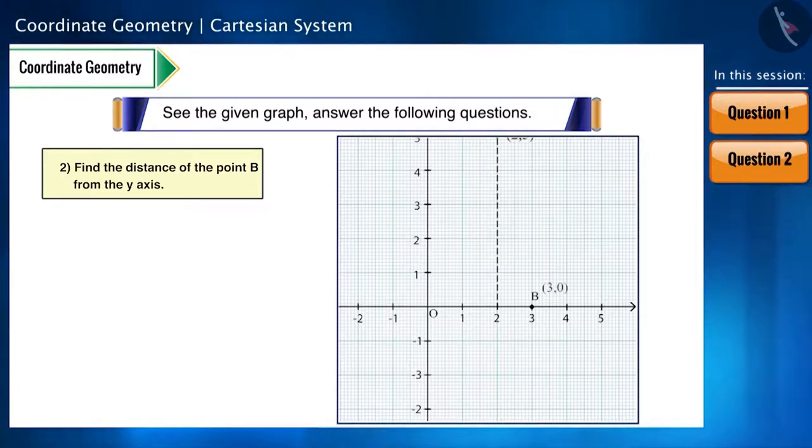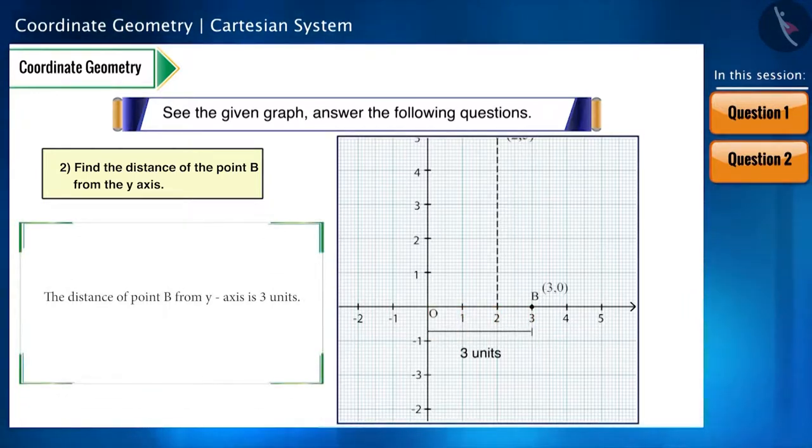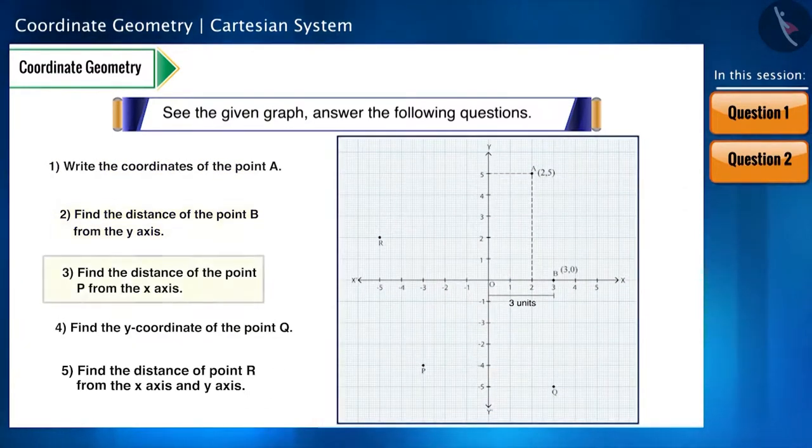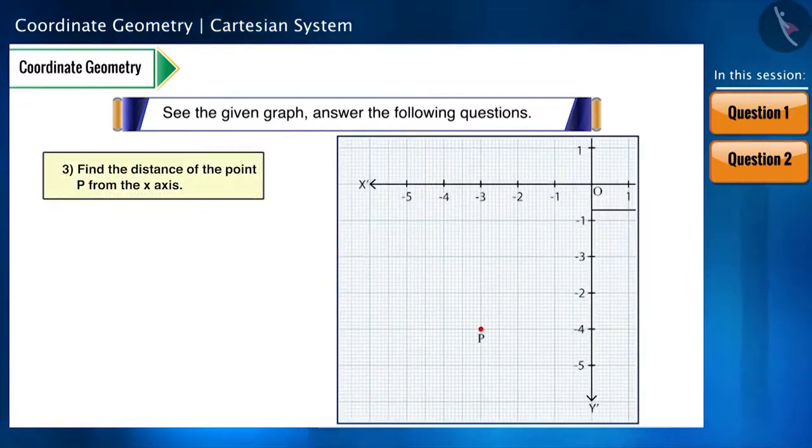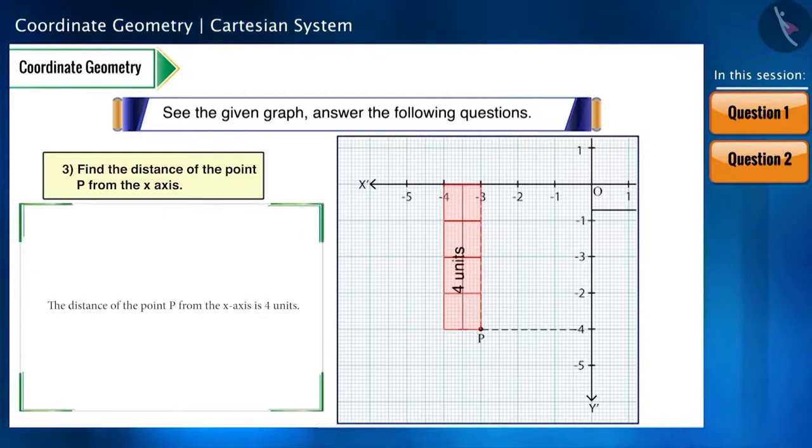You can see that this point is located 3 units away from the origin. That is, the distance of this point from the Y axis will be 3 units. Now the third sub-question. Find the distance of the point P from the X axis. We will also plot it in the same way and we can see that it is located 4 units away from the X axis.